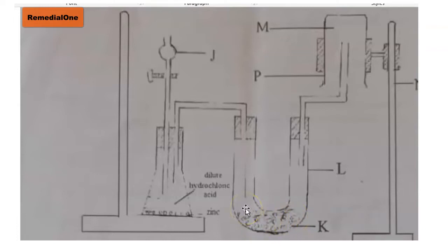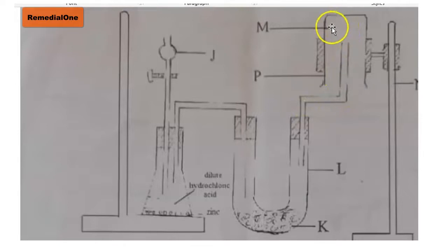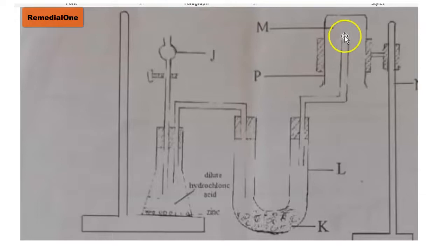The condition for selecting a drying agent is that the drying agent should not react with the gas concerned. After the gas is dried, it will pass through the delivery tube again and then be collected in the gas jar. If you look at the diagram carefully, the gas jar is inverted, which tells you that the gas is being collected by upward delivery or downward displacement of air.